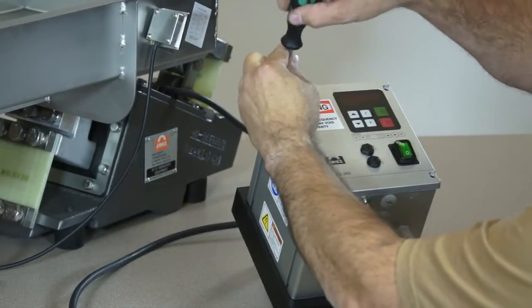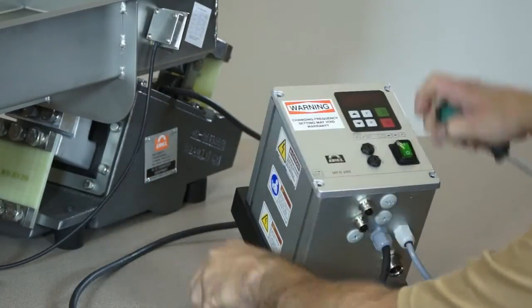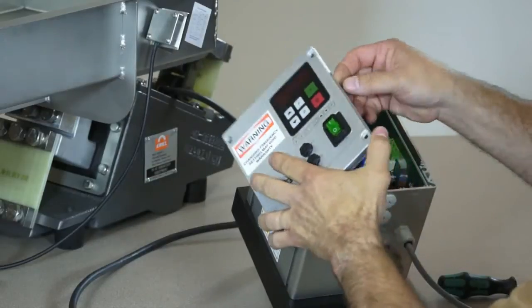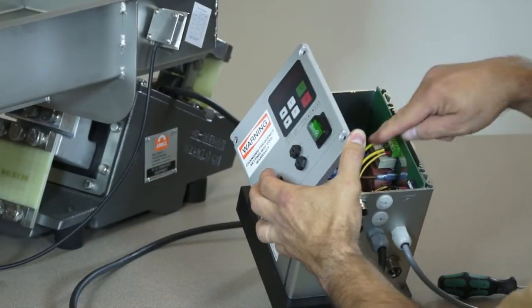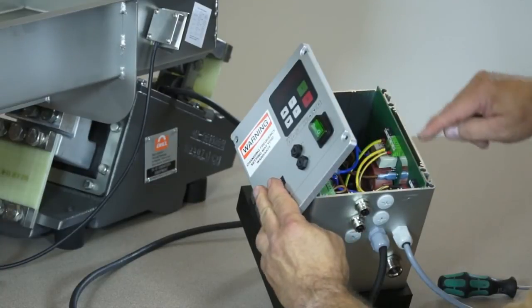Removing four screws on the cover of the unit allows access to the wiring terminals. Power terminals are on the right. Signal terminals are on the left. For now, we'll just look at the power terminals.